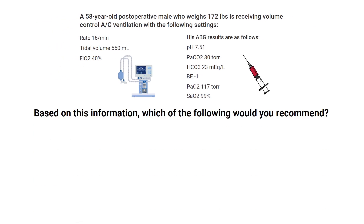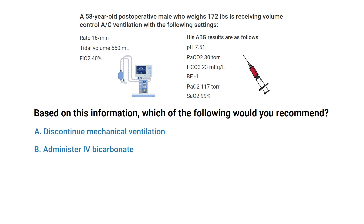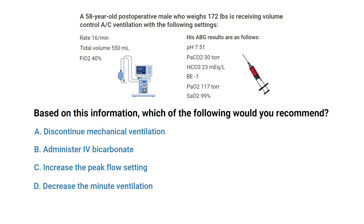PaO2 of 117 and an SaO2 of 99%. Based on this information, which of the following would you recommend? A) Discontinue mechanical ventilation, B) Administer IV bicarbonate, C) Increase the peak flow setting, or D) Decrease the minute ventilation.